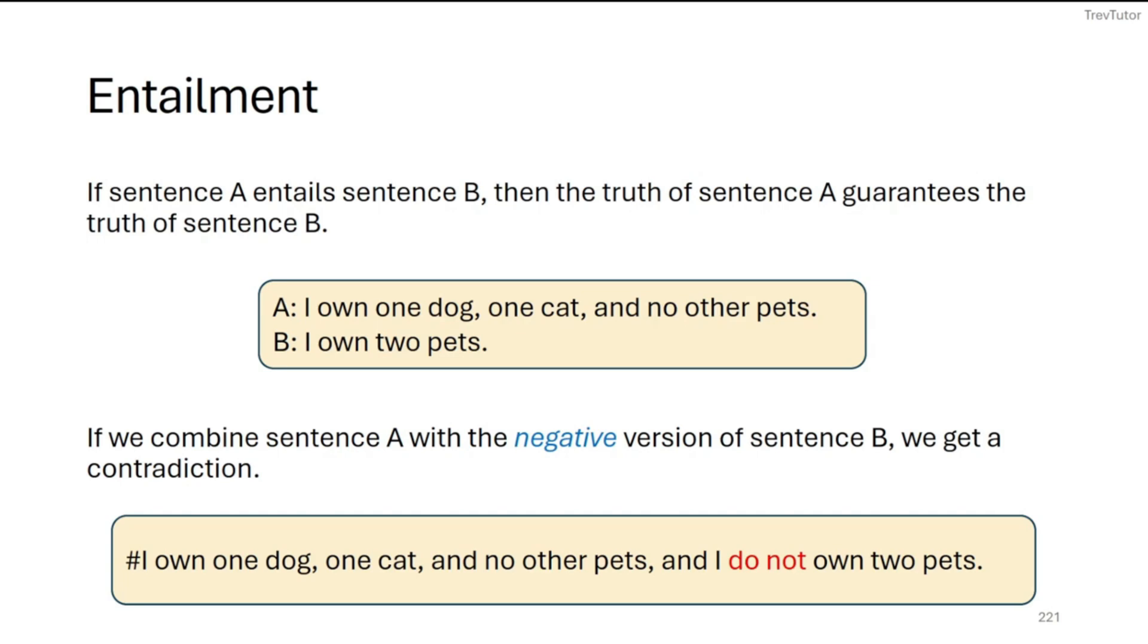So I own one dog, one cat, and no other pets. That's sentence A. That entails that you own two pets. Because if you add these things up, one dog, one cat, and no other pets, we get a total of two pets. So B is entailed by A.